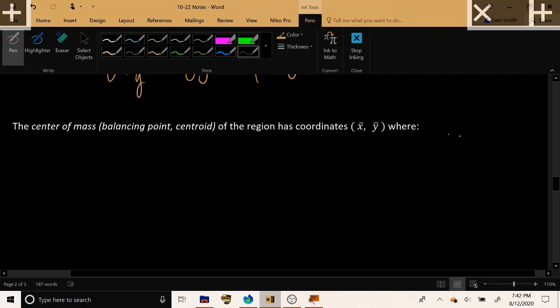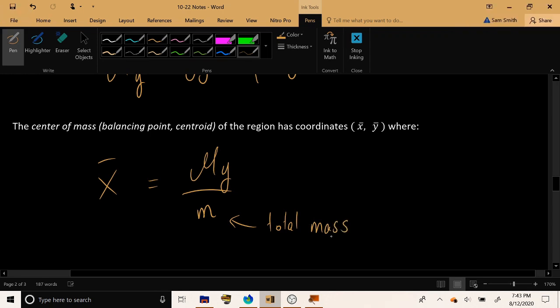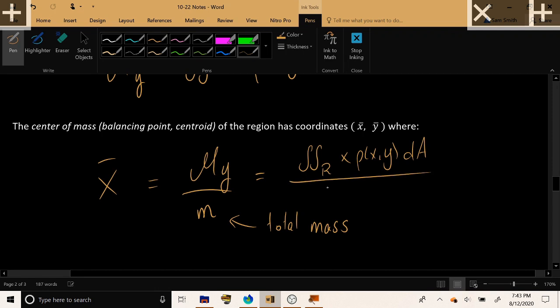The center of mass has coordinates that are traditionally denoted by x̄ and ȳ. If you want to find the x-coordinate of the center of mass, what you do is you take the moment about the y-axis and you divide it by the object's total mass. So it may be helpful to actually write these formulas out in full: x̄ equals the integral over R of x·ρ(x,y) divided by the integral over R of ρ(x,y).